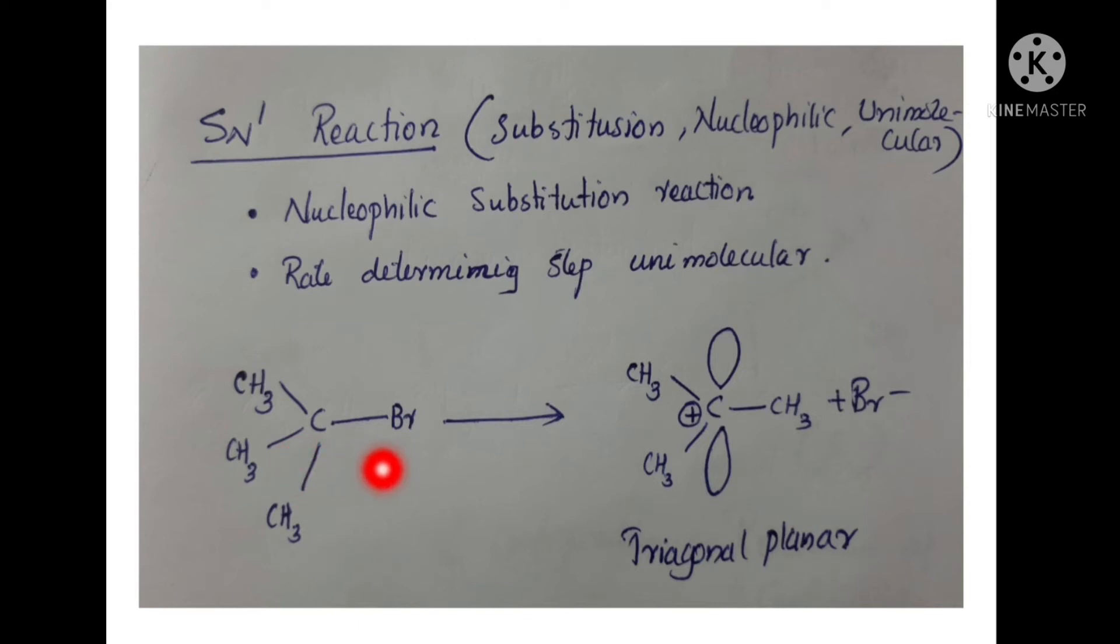In the SN1 reaction, there is an intermediate form called a carbocation, which is trigonal planar.